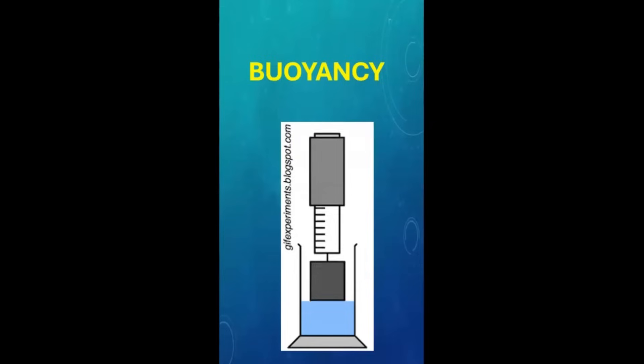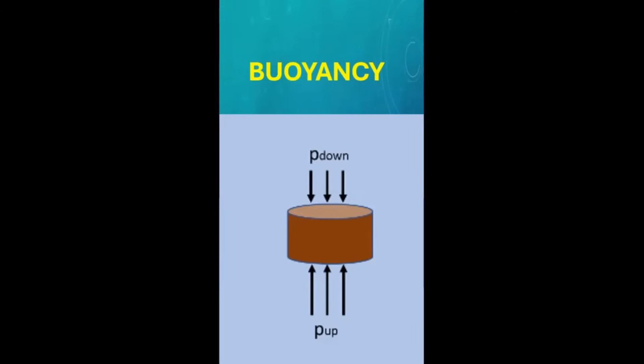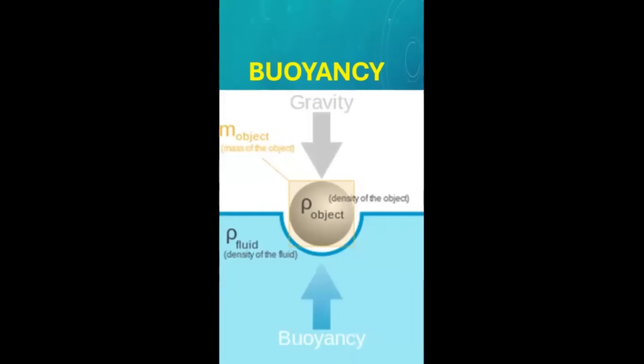Buoyancy is the upward force experienced by an object submerged in a fluid such as water or air. It occurs because the pressure at the bottom of the object is greater than at the top, resulting in a net force pushing the object upwards. This force is proportional to the density of the fluid, the volume of the object submerged, and the acceleration due to gravity.